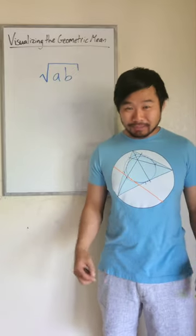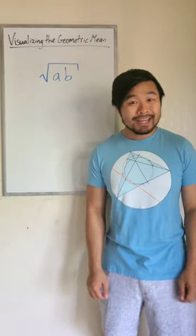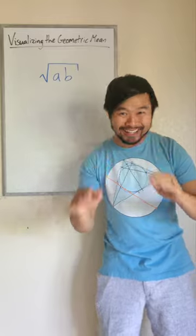How can we visually see why the geometric mean of two numbers a and b is the square root of a times b? Let's find out.